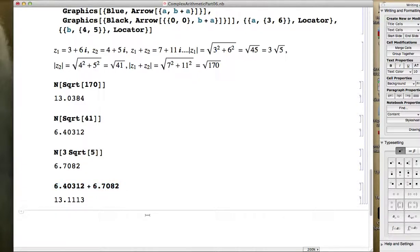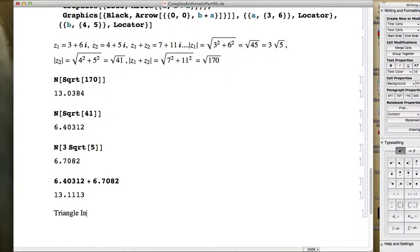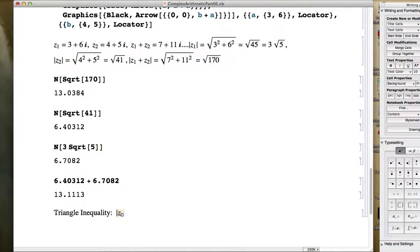First new thing I want to do in this video is illustrate how to write out the triangle inequality in symbols. It says that the modulus of the sum is less than or equal to the sum of the moduli of the two numbers individually. So that's the symbolic form of the triangle inequality.